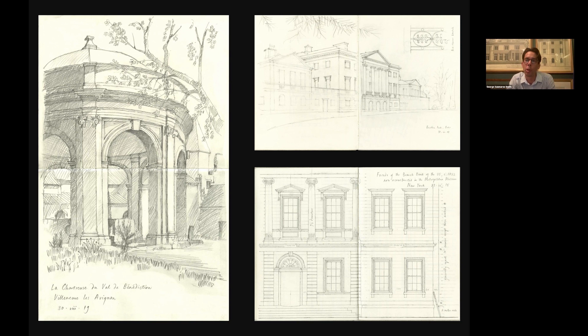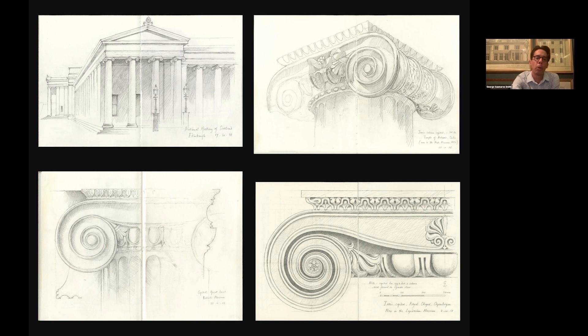Next, let's look at the Ionic order, traditionally said to have a matronly character and more feminine than the Doric. On the left is a circular arcaded building in Villeneuve-lès-Avignon in France. At the top right is a country house in Berkshire called Basildon Park, which has an Ionic portico. Below this is the façade of an American bank, now reconstructed in the Met in New York. The most recognisable part of the Ionic order is the capital with its spiralling scrolls called volutes. Vitruvius described these as being like the curls of a maiden's hair; they might also remind us of spiral forms found in nature, such as nautilus shells or ram's horns. Their origins lie in earlier Egyptian capitals based on stylised plant forms, and so the use of the Ionic order in antiquity carried a memory of earlier civilisations.